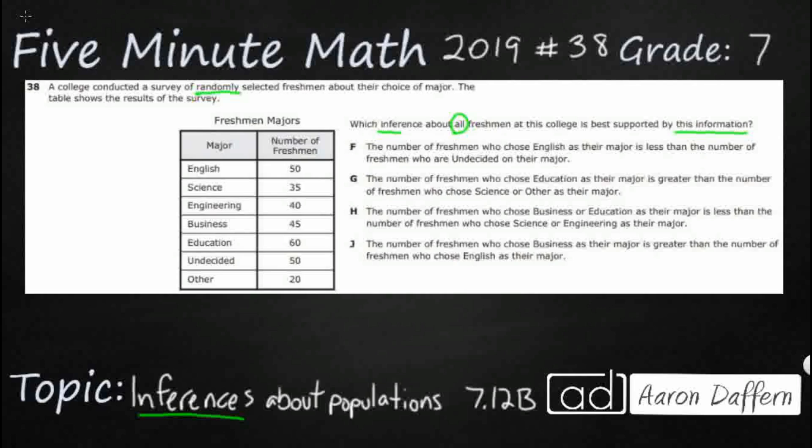So let's take a look at these. F, the number of freshmen who chose English as their major - I'm going to replace these sentences with numbers. English is 50, is less than undecided. Does 50 look like it is less than 50? Nope, it's equal to 50. So F is incorrect. We would say if they changed this to equal to we'd be fine, or maybe 'is about the same as.' What we're going to do is turn these statements into number sentences and then just compare. Pretty straightforward.